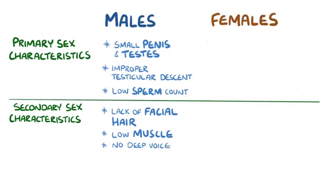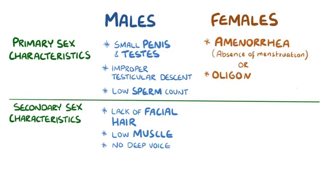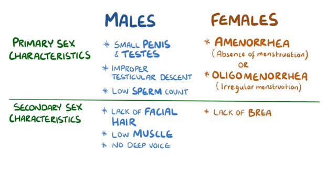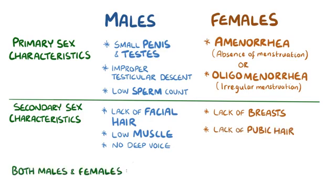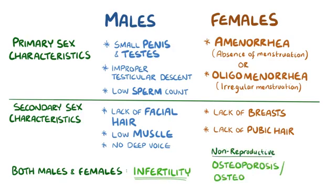In females, primary sex characteristic dysfunction includes amenorrhea — or absence of menstruation — or oligomenorrhea, or irregular menstruation. Secondary sex characteristic dysfunction includes a lack of breast development and pubic hair. For both males and females, Kallmann syndrome often leads to infertility. Other non-reproductive symptoms include osteoporosis or osteopenia, because testosterone and oestrogen are protective against bone resorption.